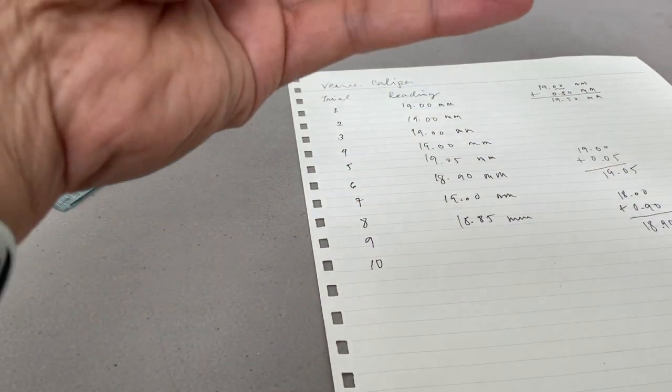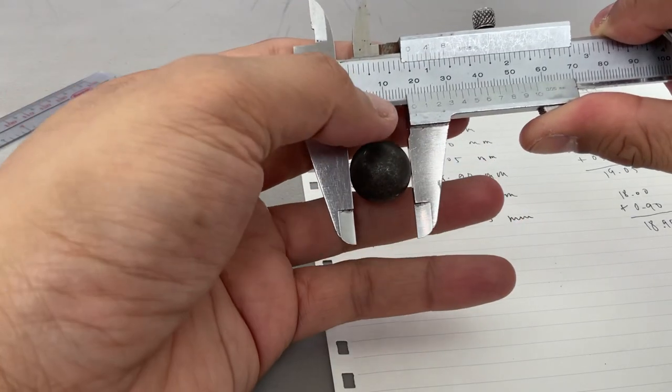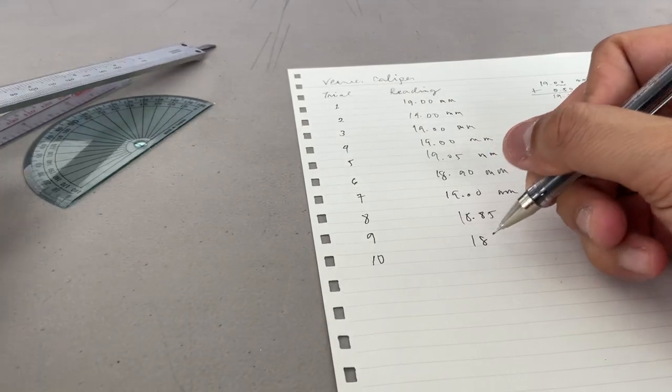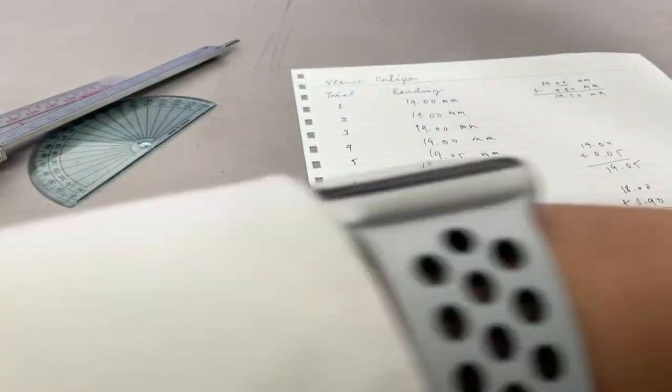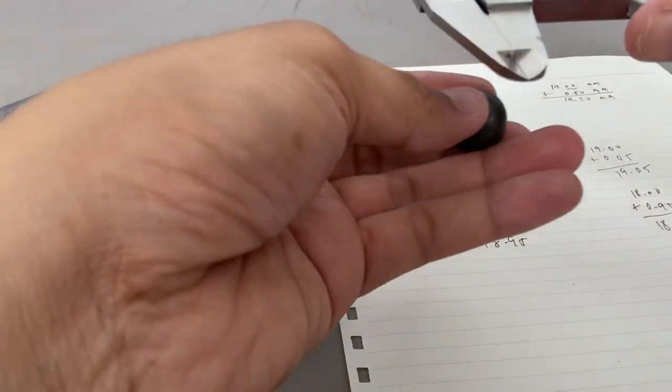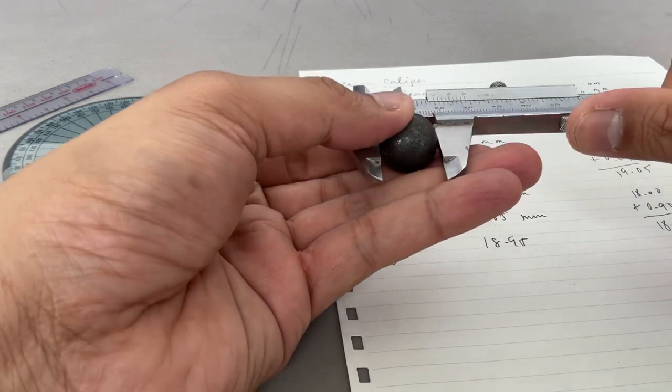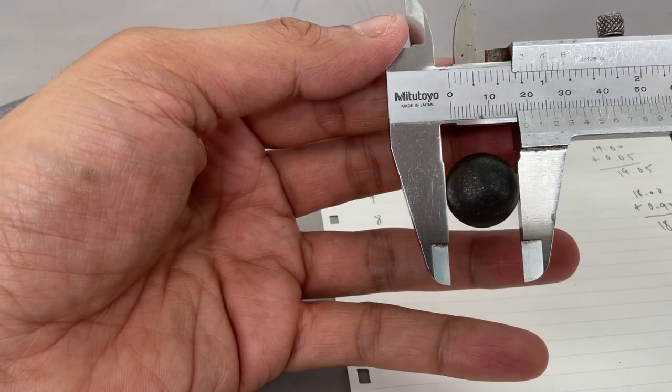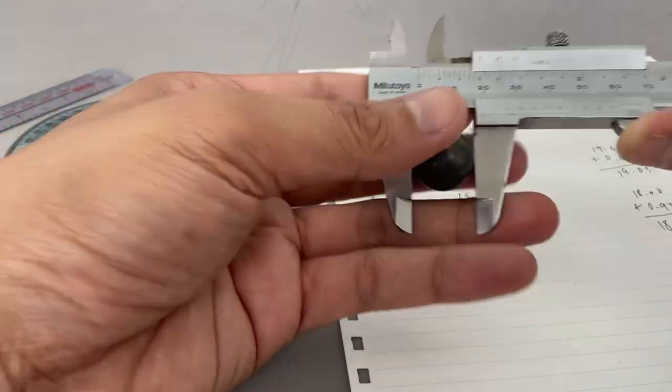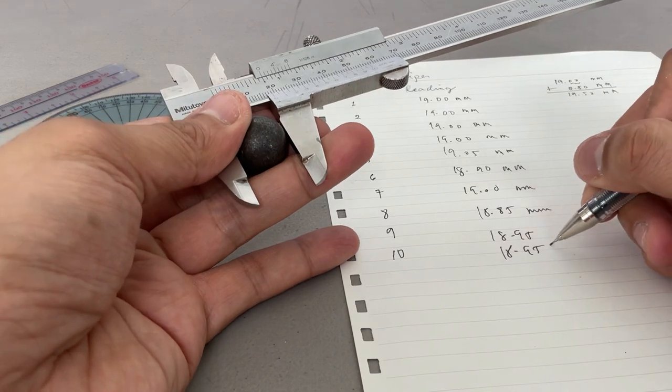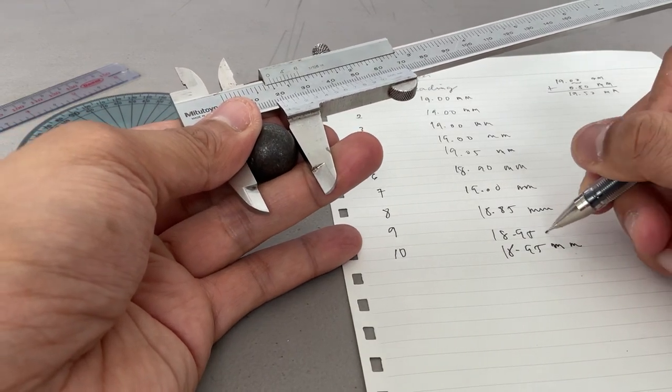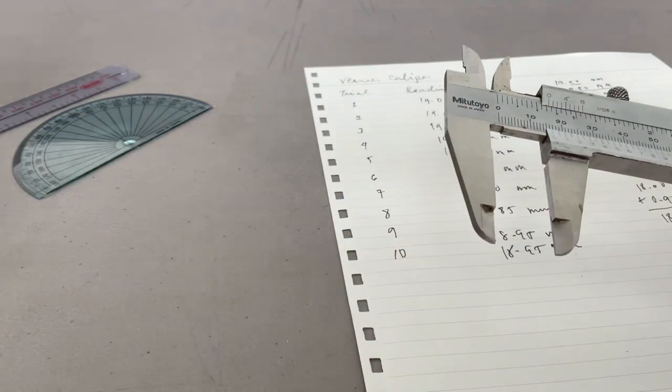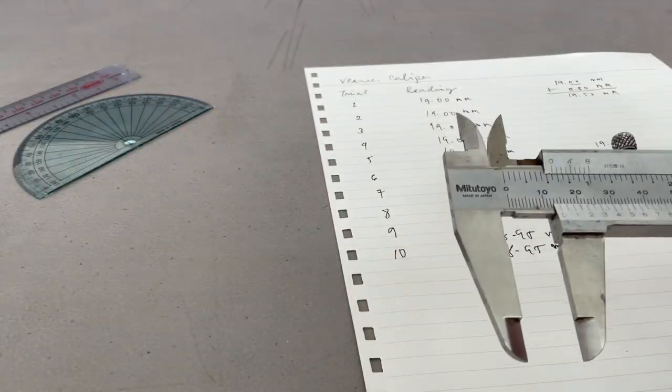Trial number 9, 18.95. And for my last trial, let me try that again. 18.95. So that's how you measure a dimension using a vernier caliper.